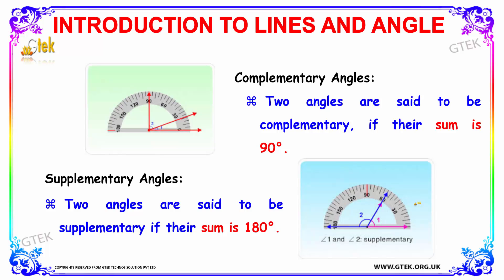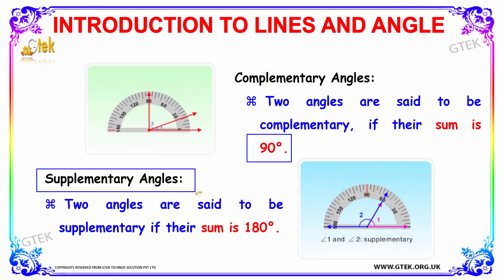Now let's discuss about complementary and supplementary angles. Two angles are said to be complementary if their sum is 90 degrees. Two angles are said to be supplementary if their sum is 180 degrees.